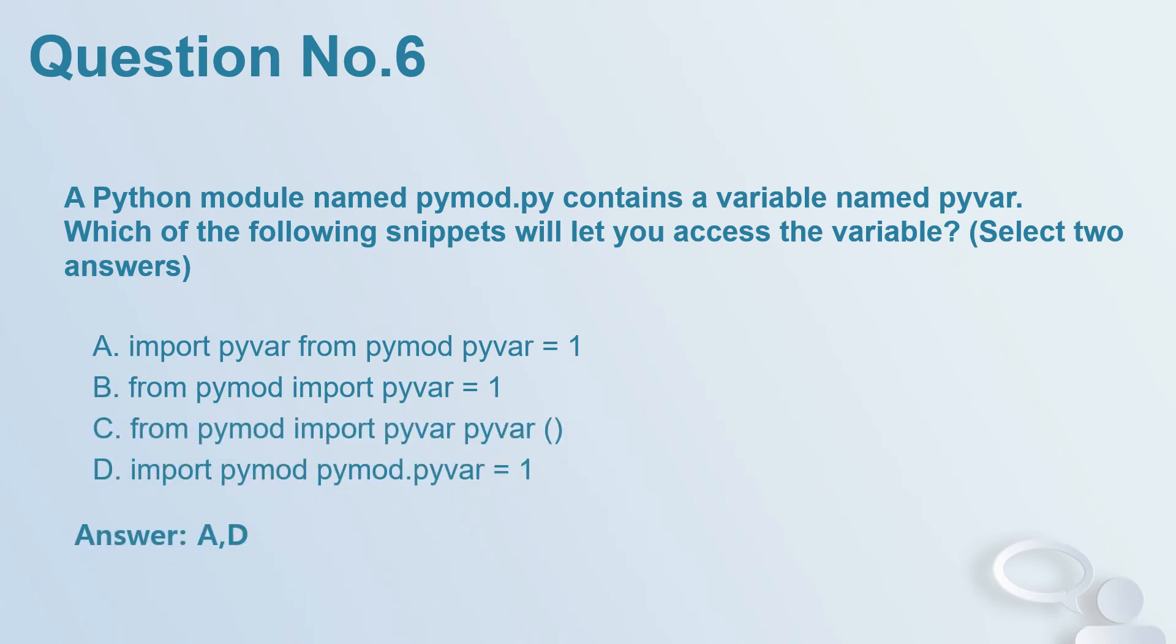Question number 6. A Python module named pymod.py contains a variable named pyvar. Which of the following snippets will let you access the variable? Select two answers. A. import pyvar from pymod, pyvar = 1. B. from pymod import pyvar = 1. C. from pymod import pyvar, pyvar. D. import pymod, pymod.pyvar = 1. Answer: A, D.